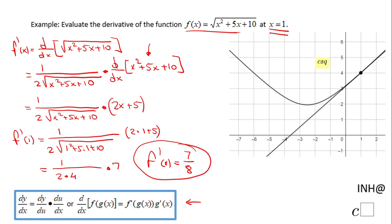Don't forget, that value means the slope of the tangent line to this curve of f of x at x equals 1. So this is the tangent line. The slope of this line is 7 over 8.